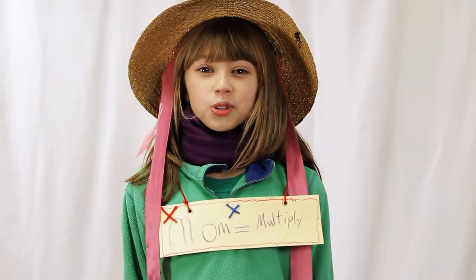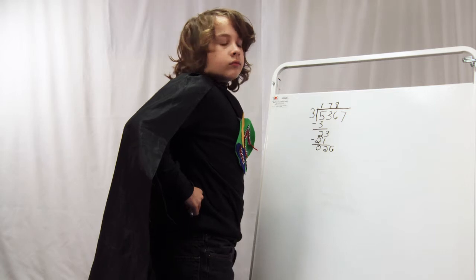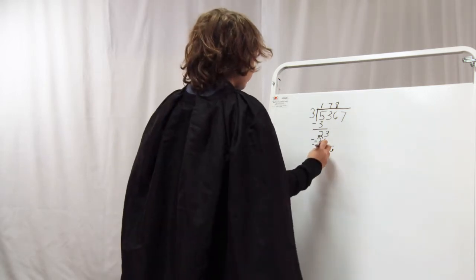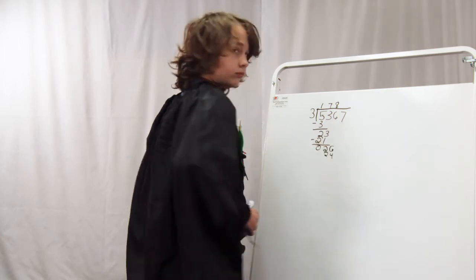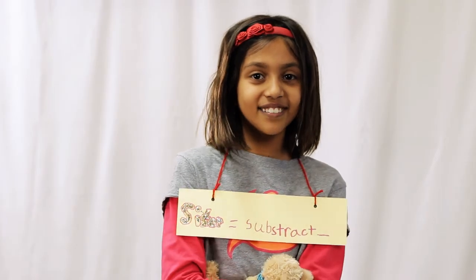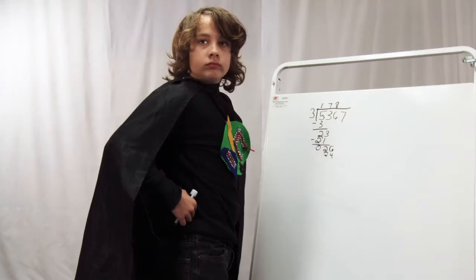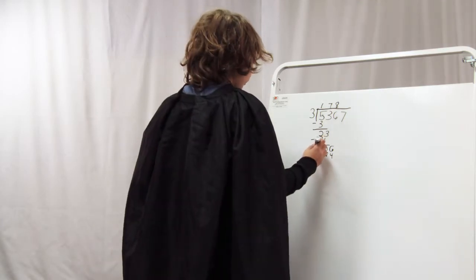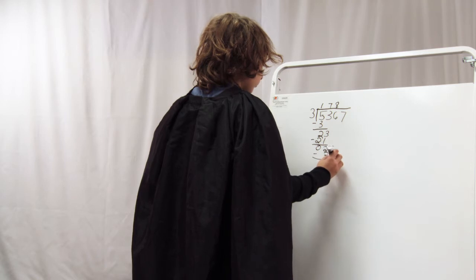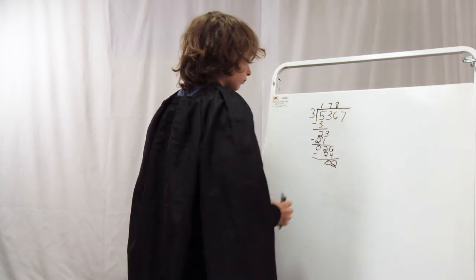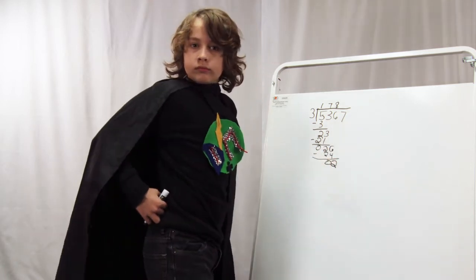Now we multiply! Three times eight is twenty-four. Now we subtract! Twenty-six minus twenty-four is two.